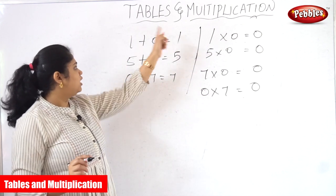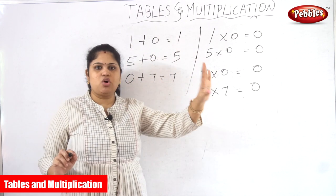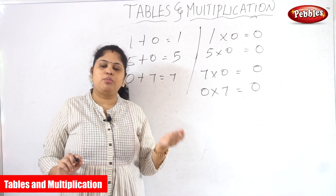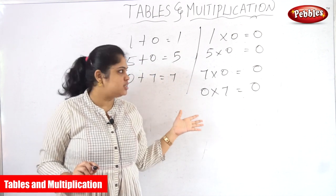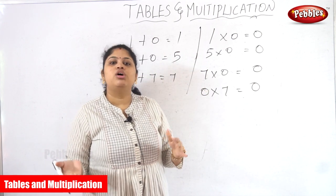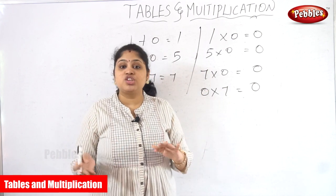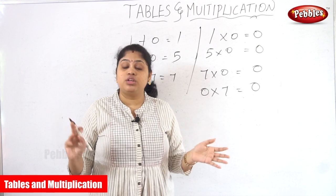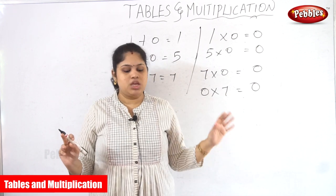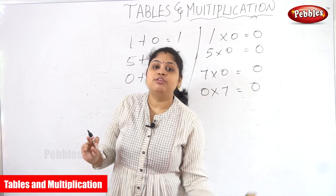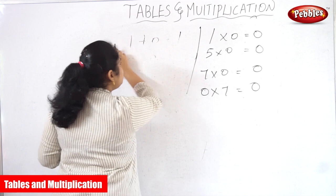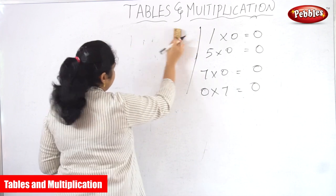In addition, 1 plus 0 or 5 plus 0 — the number itself will be the answer. Whereas in multiplication, 1 into 0, 5 into 0, or 0 into 5 — whenever zero is involved, the answer will also be zero. This is the main difference between addition and multiplication and you should be very clear about it.